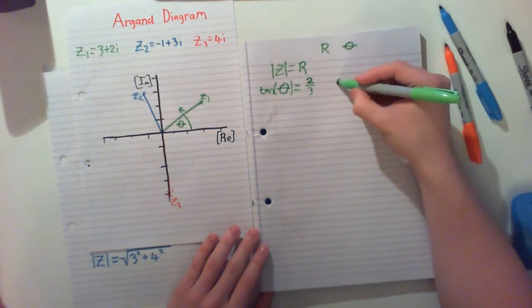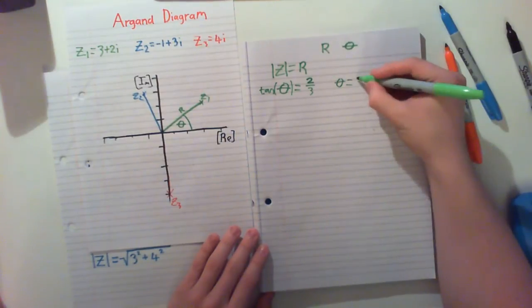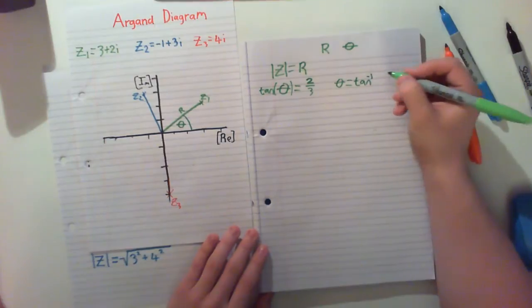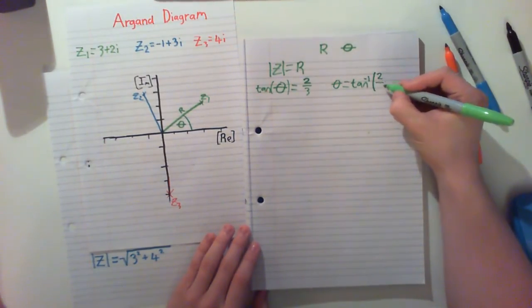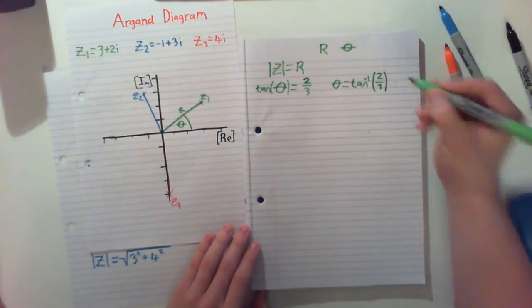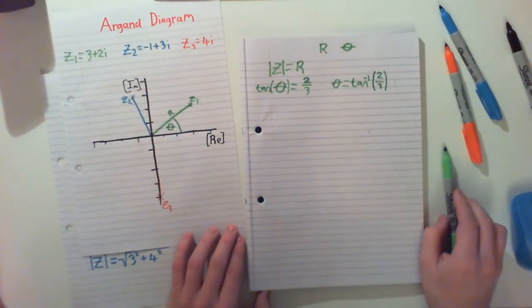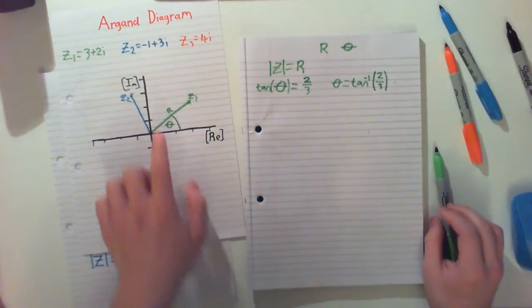So that means our angle theta is equal to inverse of tan, or arctan as it's also called, of 2 over 3, 2 thirds. And that will give us our angle just there. And that's how we can work that out.